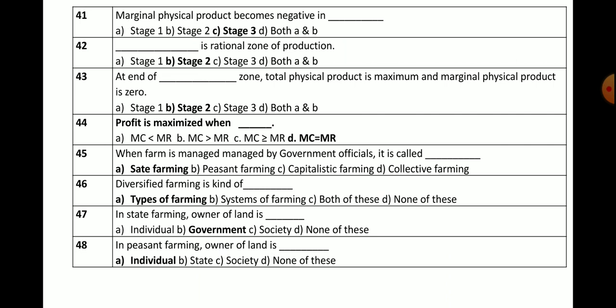Question number 46: Diversified farming is a kind of — options: types of farming, systems of farming, both of these, or none of these. The correct answer is types of farming. As we know, specialized farming, diversified farming, dry farming, mixed farming, and ranching are all types of farming.